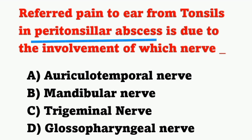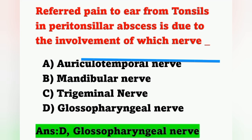First question: a referred pain to the ear from tonsils in peritonsillar abscess is due to the involvement of which nerve? Options — option A: auriculotemporal nerve, option B: mandibular nerve, option C: trigeminal nerve, option D: glossopharyngeal nerve. The nerve affected in peritonsillar abscess is the glossopharyngeal nerve. Option D is the correct answer.